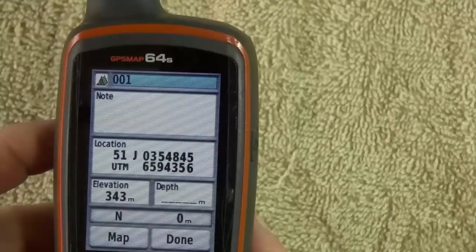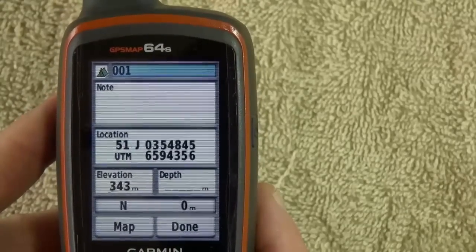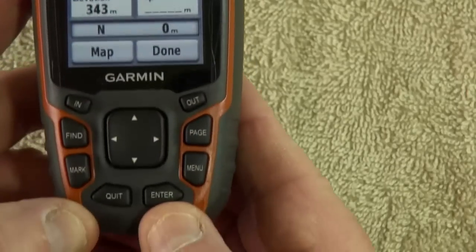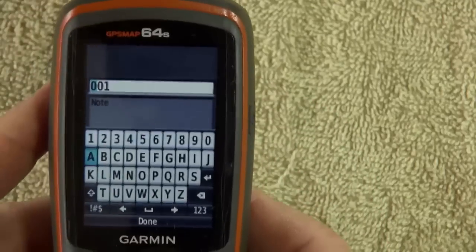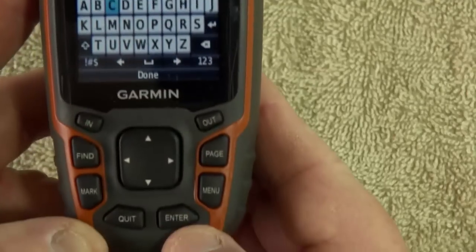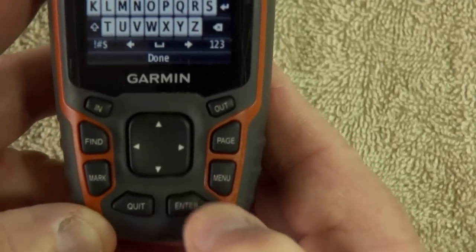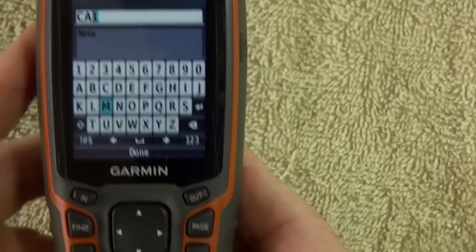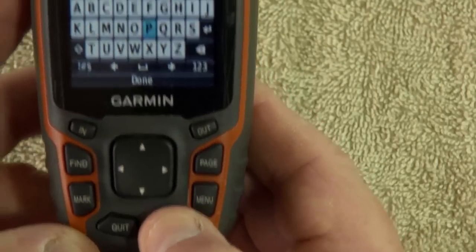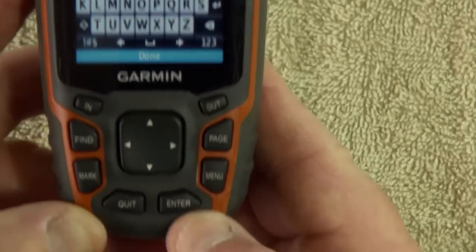Now, the thing that I've highlighted now is the name of your waypoint. Well, in this case, it allocates a number. It'll go up automatically in sequence. But let's change the name. We'll do that. Enter. Okay. So it's our camp. So highlight the C. Enter. Highlight the A. Enter. Highlight the M. Enter. And the P. Enter. Right, it says camp. You happy with that? You go down to done. Enter.